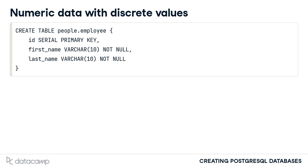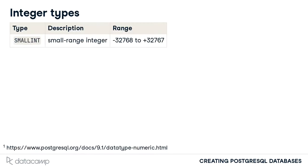What if we wanted to also track the number of sales generated by an employee? This can be done by including a num_sales column when creating the employee table. We do not anticipate awarding half of a sale to an employee, so a discrete value is appropriate here. PostgreSQL provides other options for representing discrete numerical values which differ in the size of the range of values each type can represent.